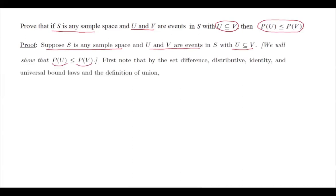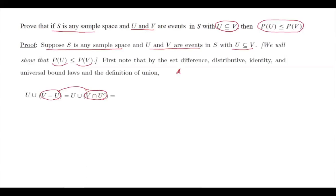We are going to apply the properties of sets using distributive, set difference, identity, universal bound law, and other definitions from set theory. Note that U union with V minus U is equal to U union V intersection the complement of U. So V minus U can be written as V intersection the complement of U — that's the meaning of the difference between two sets. In general, A minus B equals A intersection B complement.